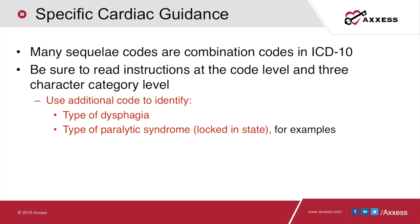Many sequelae codes in ICD-10 are combination codes, which helps preserve space for the top six diagnoses. Make sure you read instructions at the code level and three-character category level. There may be guidance saying to use additional code to identify the type of dysphagia or the type of paralytic syndrome such as a locked-in state. Don't focus only on finding the code — read the guidance above, below the code, at the three-character category level, chapter block level, and chapter level to ensure you're using all required additional codes.